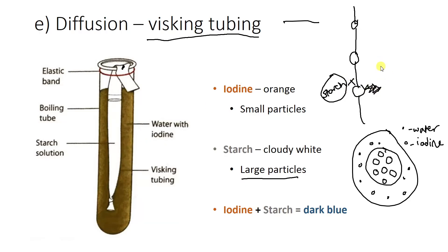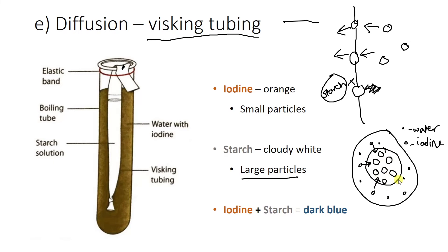Iodine, on the other hand, is on the outside and it can get through. It's small enough to pass through these gaps, and it also wants to go down a concentration gradient. So iodine is going to start coming into our cell where the starch already is. It will move in and reach equilibrium — going down the concentration gradient until there is no more gradient, until it's horizontal again.